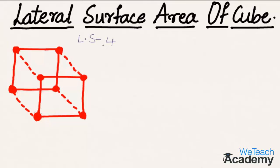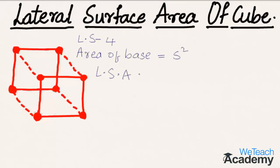The lateral surface area is the area of the side portions of the cube. To find it, we first consider the area of the base of the cube, which is s squared. We then multiply the number of lateral surfaces by the area of the base, giving us: lateral surface area of cube = 4 × s² = 4s² square units.